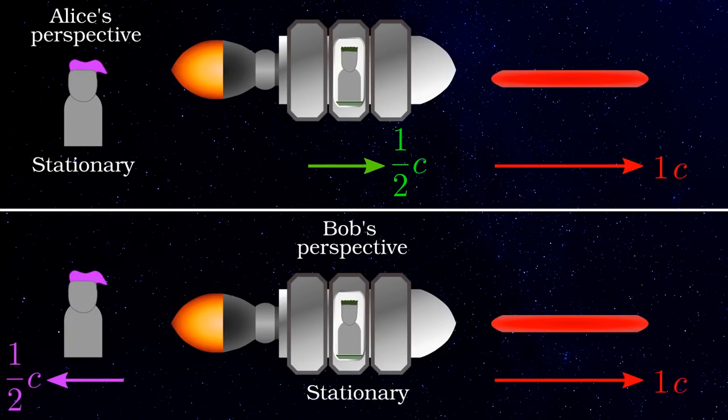Surely Bob must perceive the beam as escaping from him at only half the speed of light again? Well no, because as the postulate states, the speed of light is the same for both Alice and Bob. The way to reconcile these facts is that Alice and Bob perceive time and space differently.